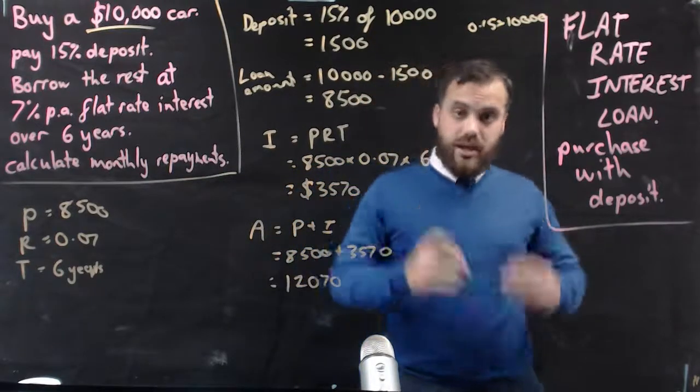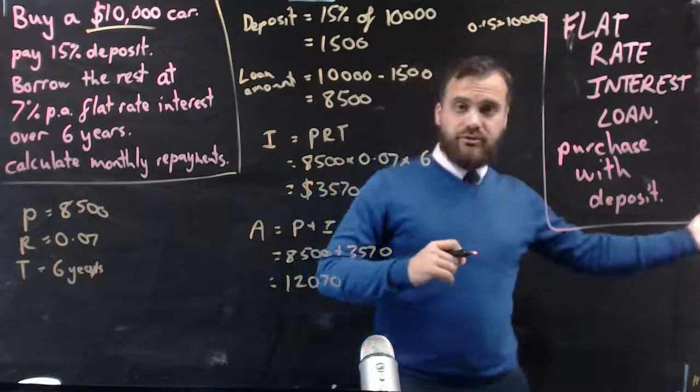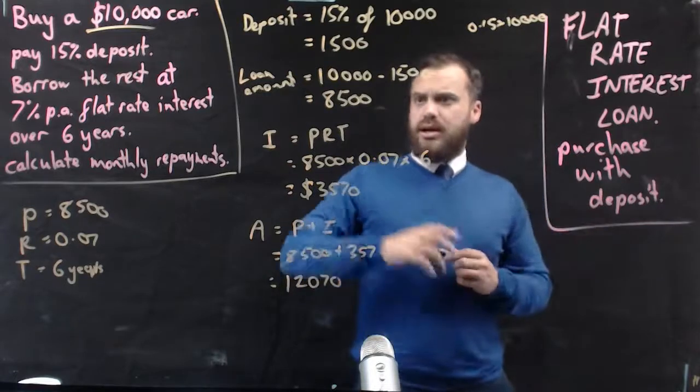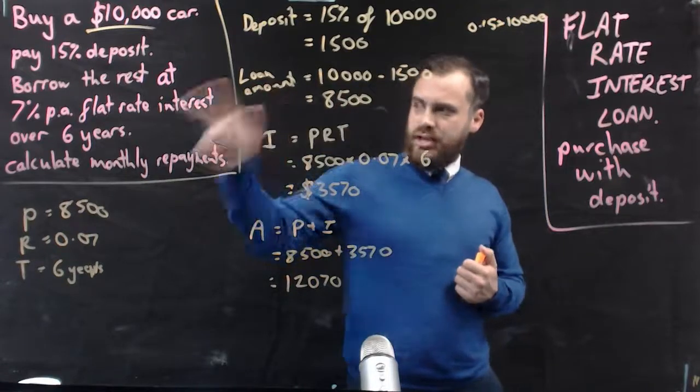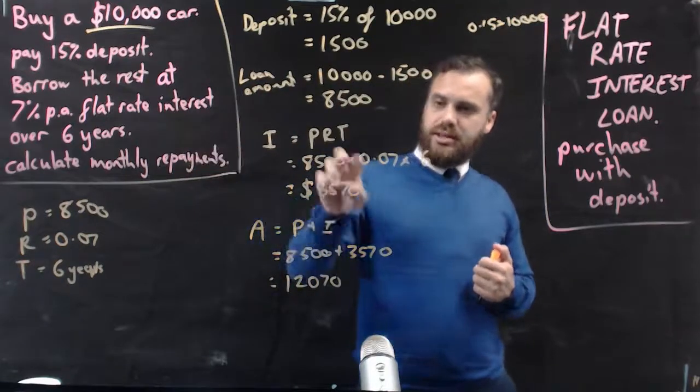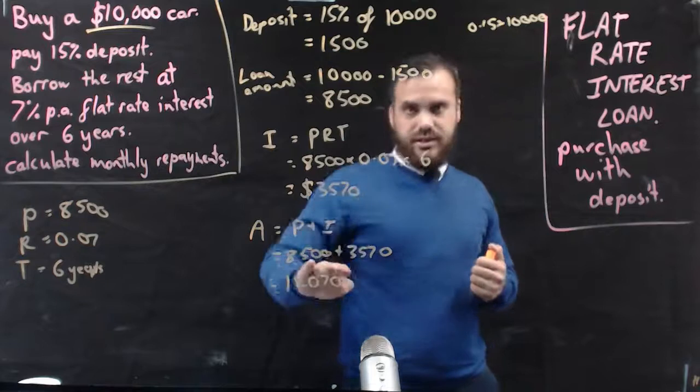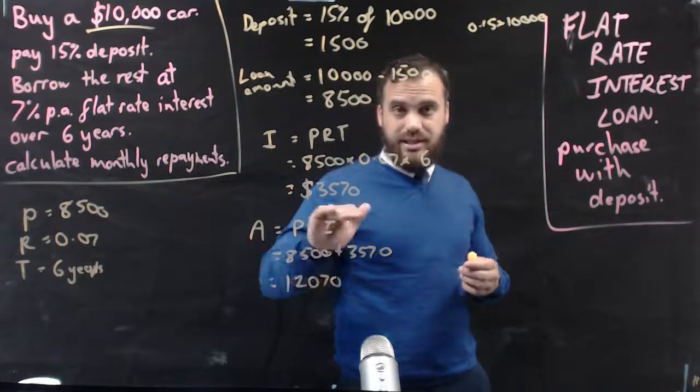Okay, so I went in, I bought a car, I gave them $1,500. I walked out with the car, and I owe them $8,500. Now I'm taking out a loan at 7% at six years. That means that over the six years, I need to pay them $12,070.